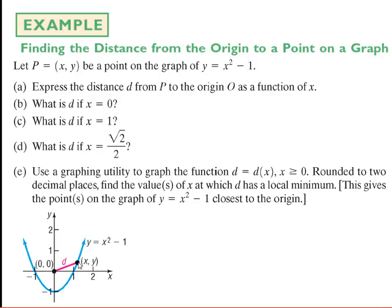What we're going to do is envision any point on this graph. I can slide this point along the graph of the parabola, and at each particular instant — like when the point is here — what's the distance to the origin? You can see that distance is going to change depending on where the point is. We want to find that distance as a function of the x-coordinate of the point. Part A asks us to express the distance d from point p on the parabola to the origin as a function of just the x value of that ordered pair.